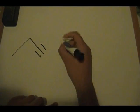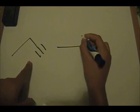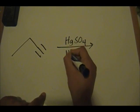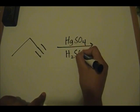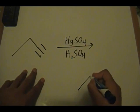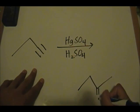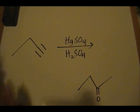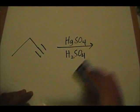The fifth method also starts with an alkyne. If we react it with HgSO₄ and H₂SO₄, the product is a ketone. Again, check your first-semester organic chemistry notes or textbook for a refresher on the mechanism. That is our fifth method for preparing a ketone.